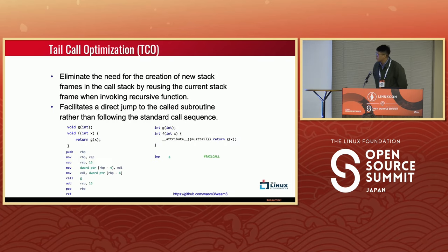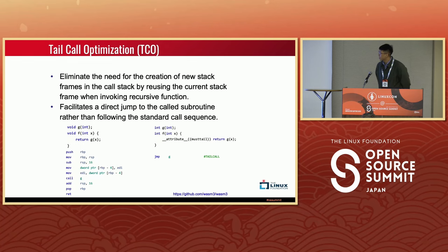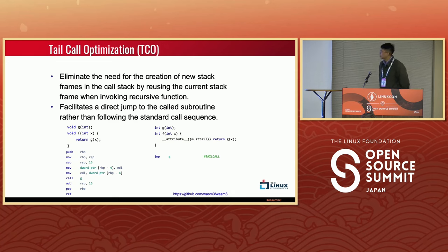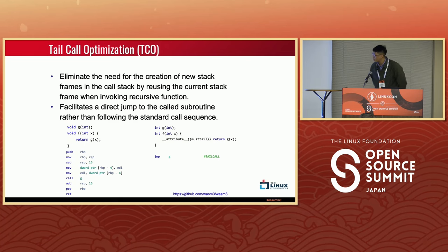The first performance technique is tail call optimization. If a recursive function has the same number of parameters, same parameter types, and the same return type, you can apply tail call optimization. When invoking the recursive function, tail call optimization eliminates the need to create a new function stack frame — we can reuse the current frame. In the first example without this optimization, we need to maintain the stack pointer register to create a new frame and use a call instruction.